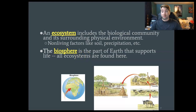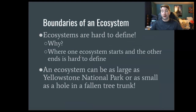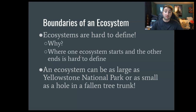Ecosystems can be hard to define because you have to think about what you're talking about. Are you talking about a biome — one giant region like the tundra, the boreal forest, or the taiga? Where one ecosystem starts and the other ends is really hard to define, and they may ask you about this on the AP exam. Because you could have one ecosystem as big as Yellowstone National Park, but on the other hand, in a decaying fallen tree you can have all kinds of organisms too — fungus, bacteria, insects, tons of different stuff.